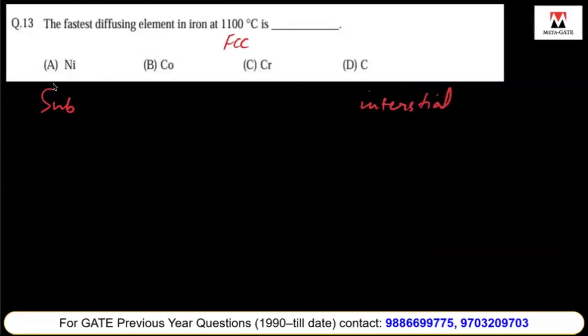We know that substitutional elements are bigger than interstitial elements, so diffusion in a close-packed structure like FCC is slower for substitutional elements than interstitial elements. Also, diffusion is inversely proportional to atomic weight, so the lighter the element, the faster the diffusion. Among all these, carbon has the lowest atomic weight, so it has the fastest diffusion.